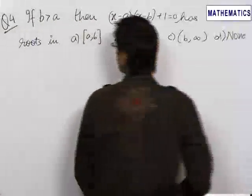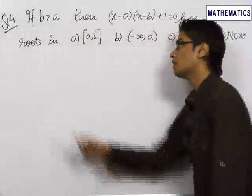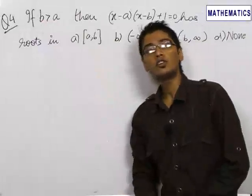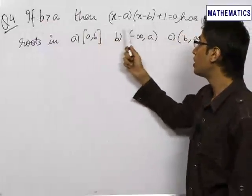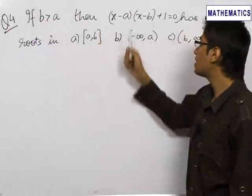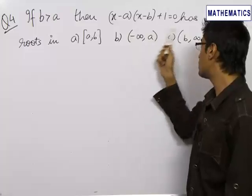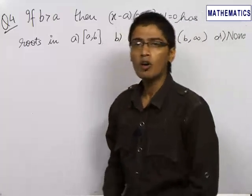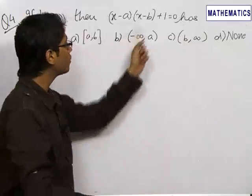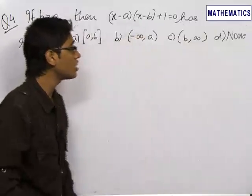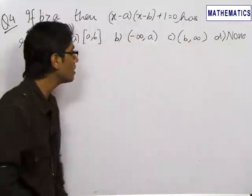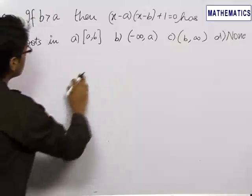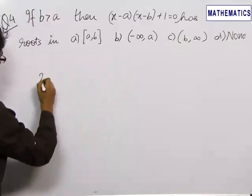Our next question goes like this. If b is given to be greater than a, then we need to find the roots of the quadratic equation x minus a into x minus b plus 1 equals 0, and determine which range they lie in. The longer method would be to find both roots and check their range, but instead we can do it in a much simpler way.